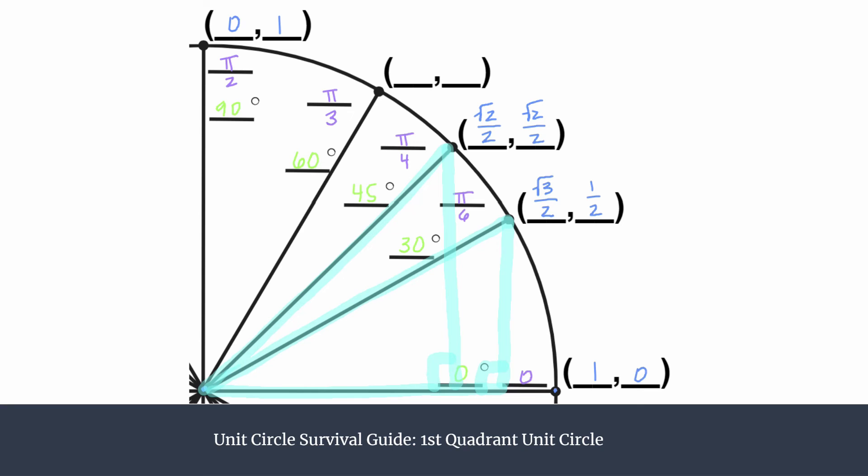And finally, we have the 60 degree angle or the pi over three radian angle. That comes from the 60, 30, 90 triangle. This is the shortest of the horizontal legs. So it makes sense that the x-coordinate will be the one half and the y-coordinate will be square root of three over two. And again, check out that video if you're interested in how we got these exact numbers for the coordinates.